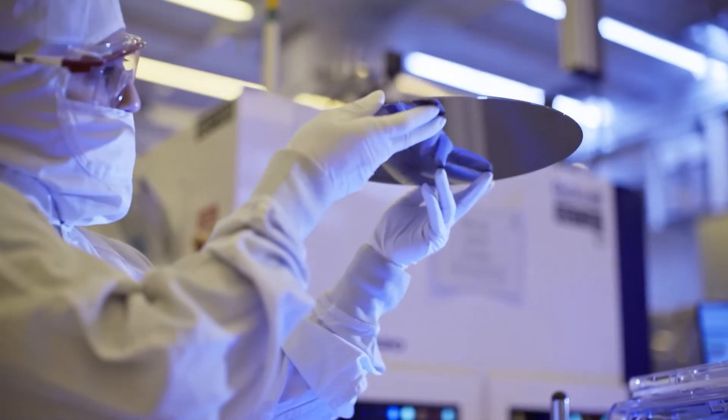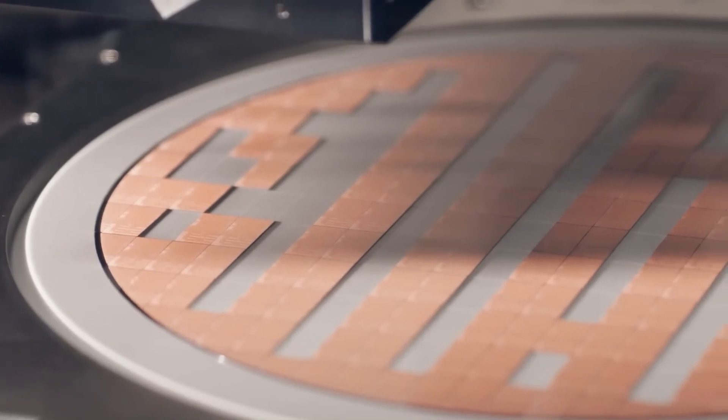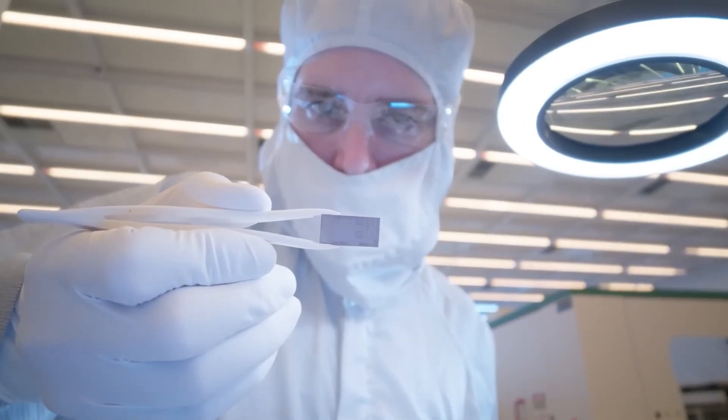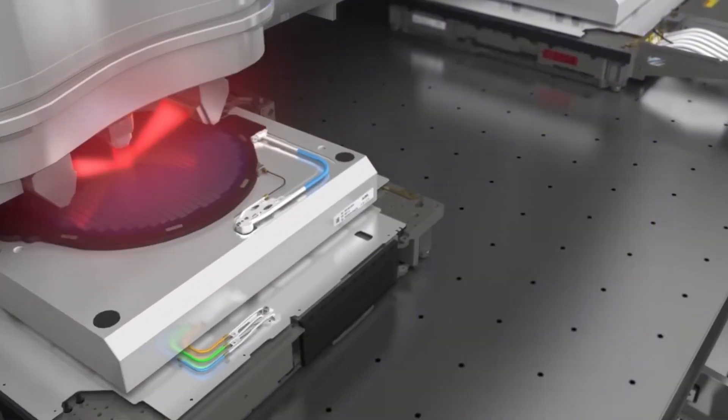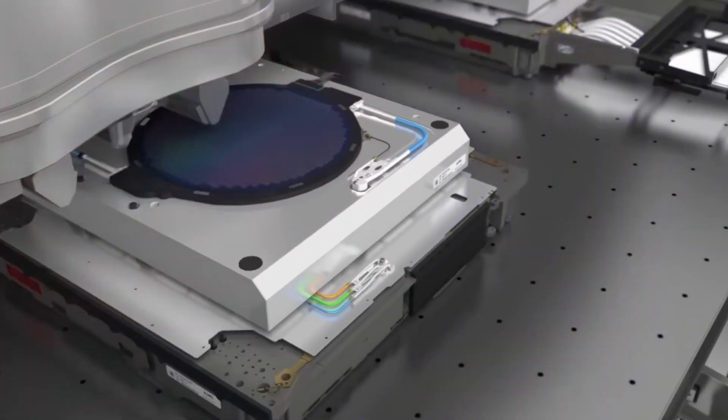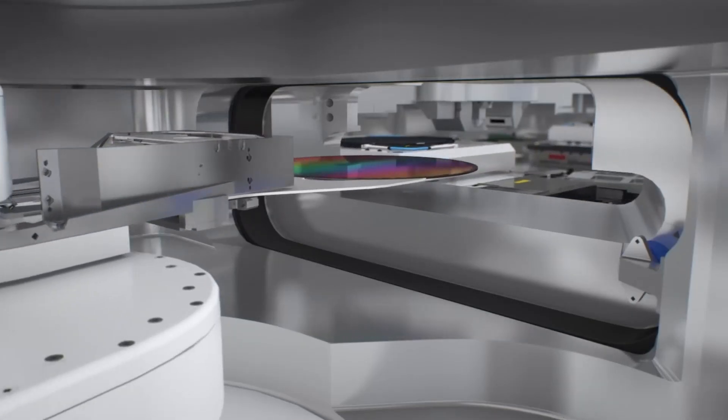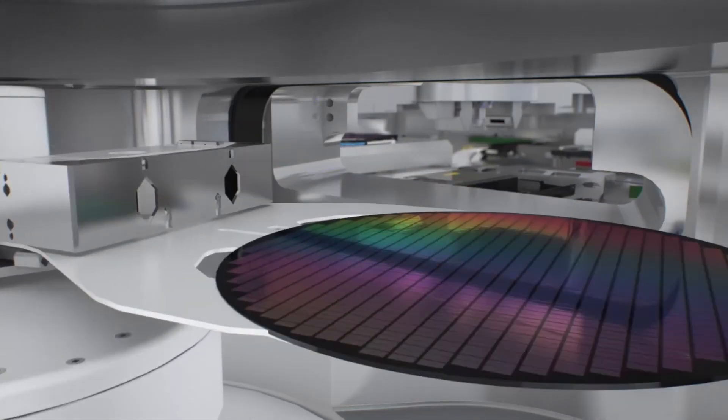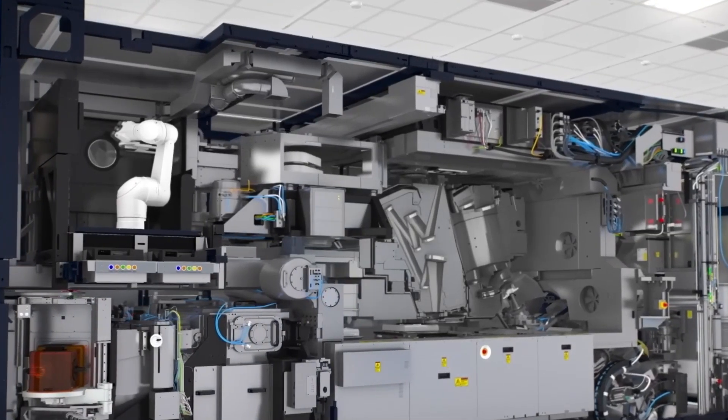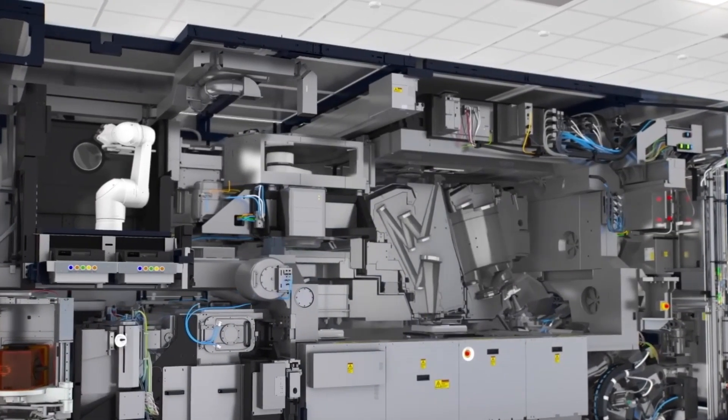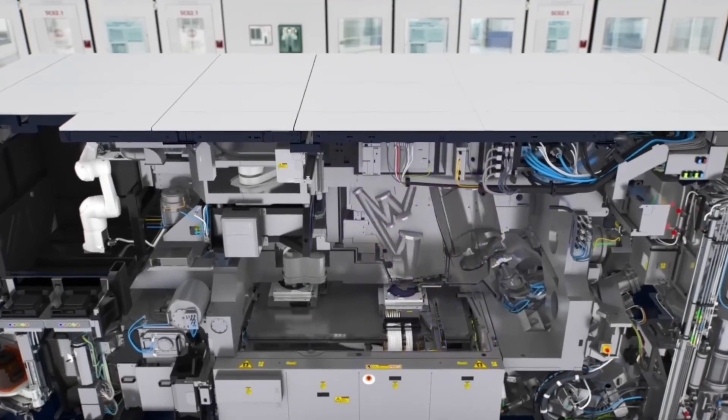One standout feature of this stage is the ability to produce billions of transistors on each chip. Think of these as tiny switches that enable the chip to perform calculations. At scales this small, the tolerances are mind-boggling. Even the tiniest misalignment could render the entire wafer unusable. It's this extreme attention to detail that sets NVIDIA's chips apart, enabling them to power anything from advanced AI systems to next-gen gaming consoles.